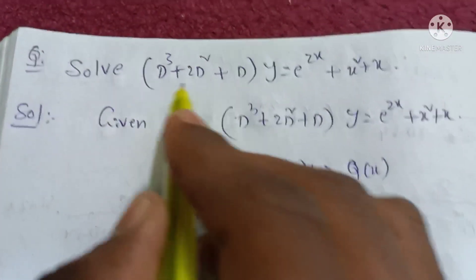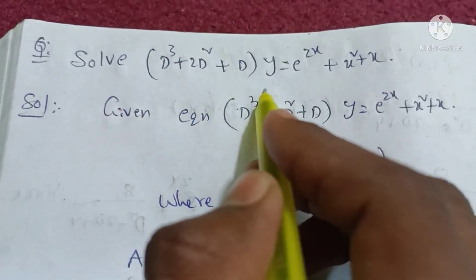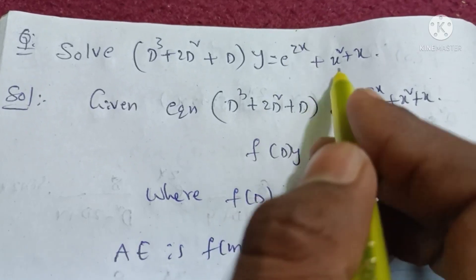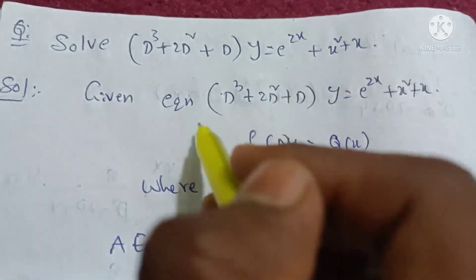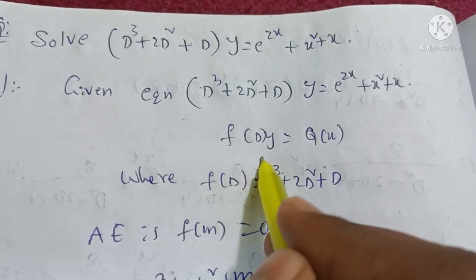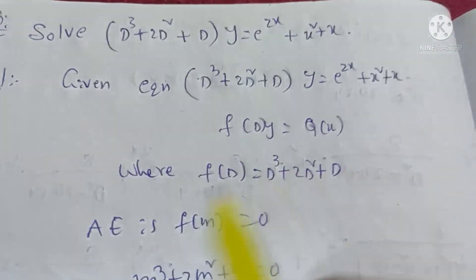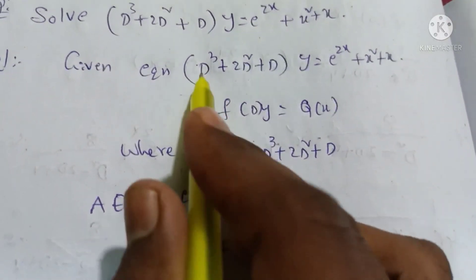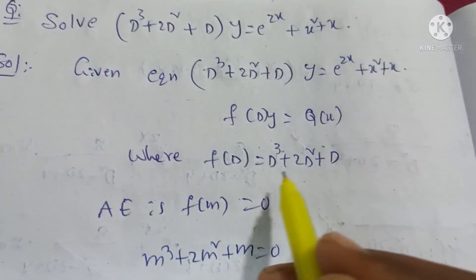Given equation: (D³ + 2D² + D)y = e^(2x) + x² + x. This is of the form f(D)y = φ(x), where f(D) is the differential operator.